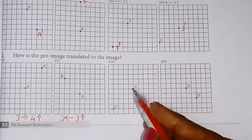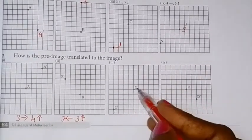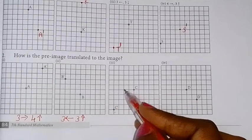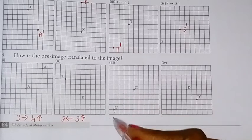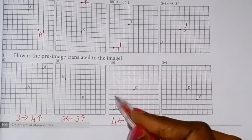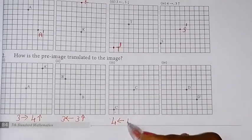C. So left side: 1, 2, 3, 4 units left side. And then 1, 2, 3, 4 units downwards.